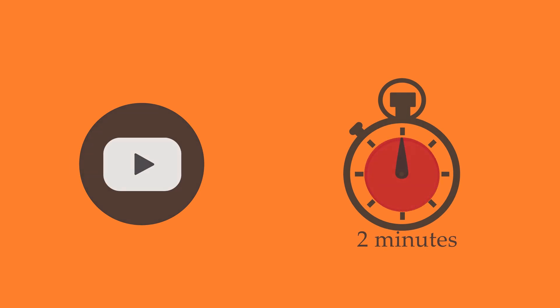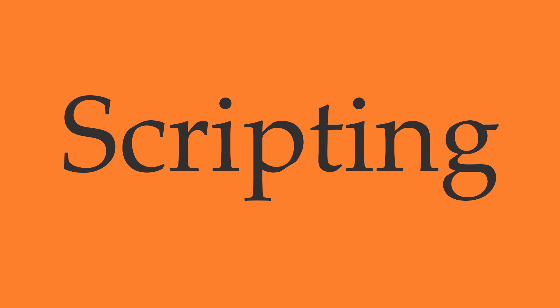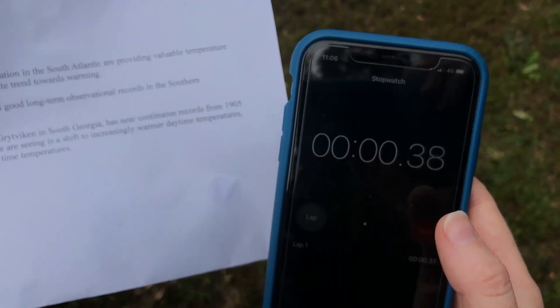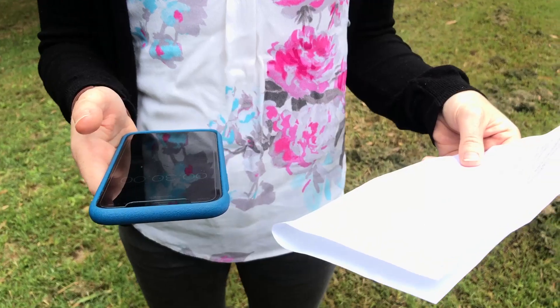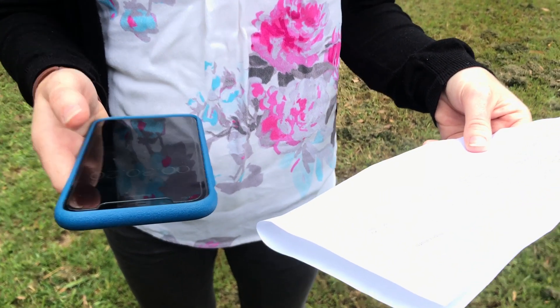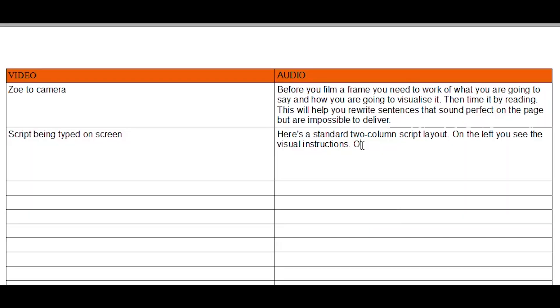And that brings us to scripting. Before you film a frame, you need to work out what you're going to say and how you're going to visualize it. Then time it by reading it out loud. This will also help you to rewrite sentences that sound perfect on the page, but are impossible to deliver. Here's a standard two column script layout. On the left, you write in the visual instructions and any text you see on the screen. On the right is the voiceover.